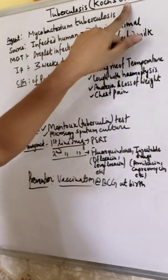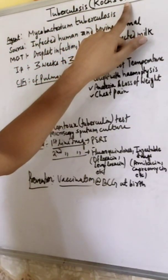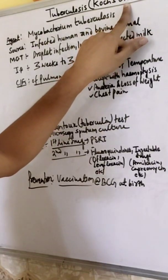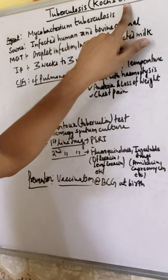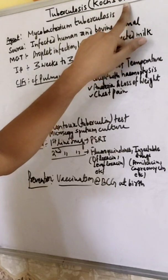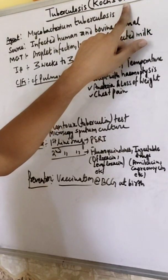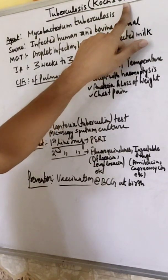Another name of tuberculosis is Koch disease. Why we call it Koch disease? Because Robert Koch discovered Mycobacterium, the causative agent of tuberculosis. That's why it is also called Koch disease.